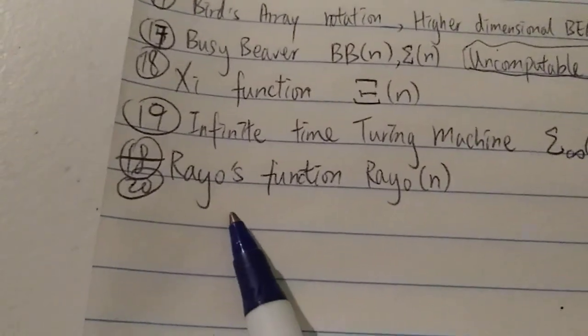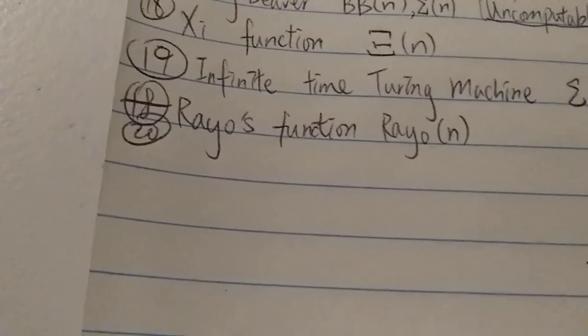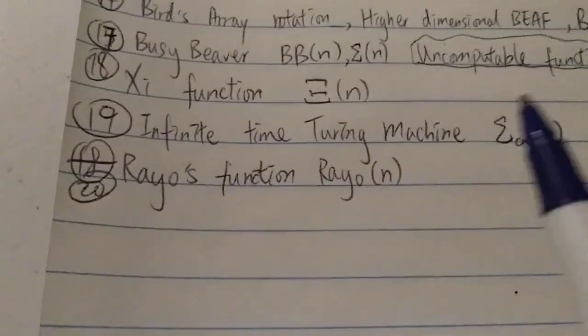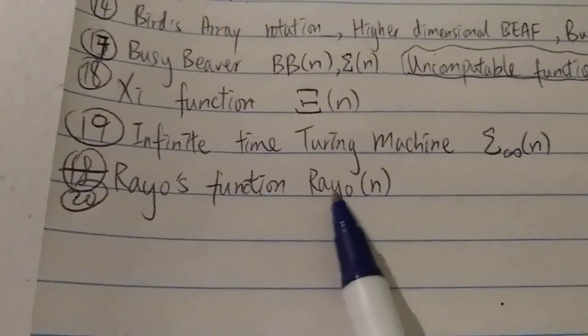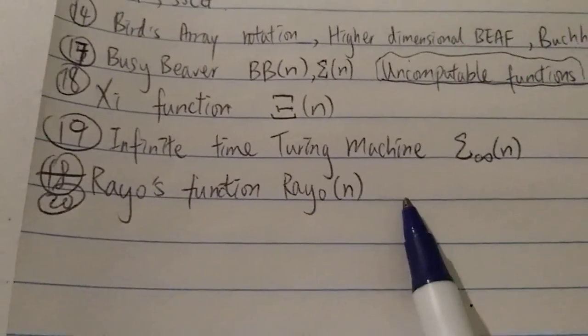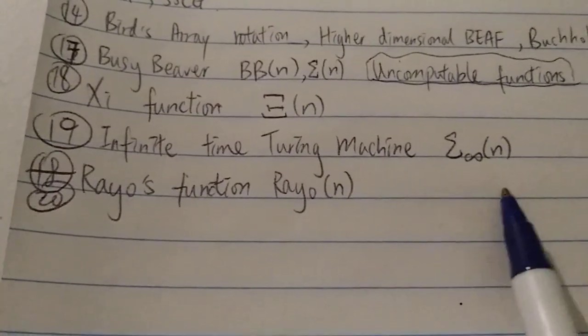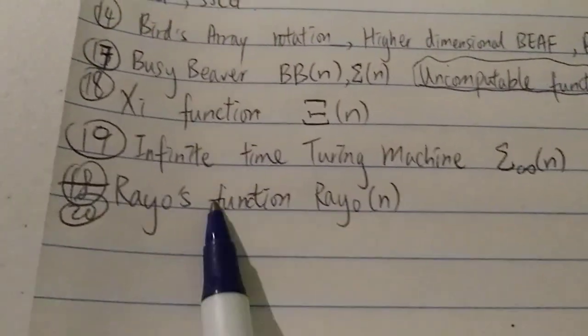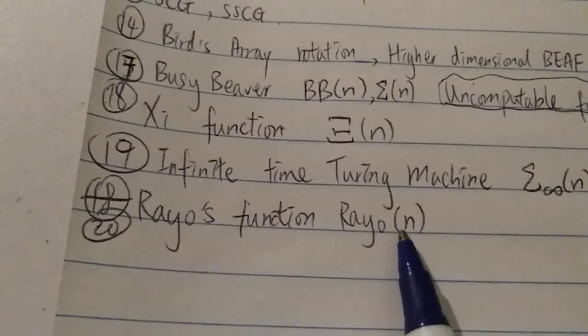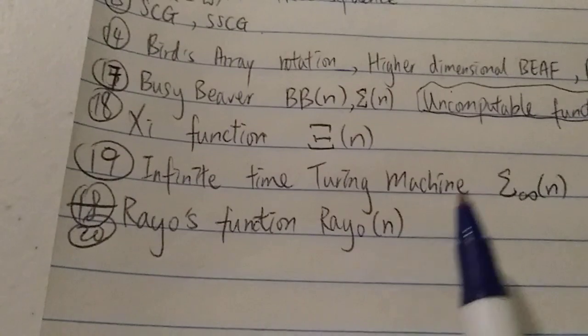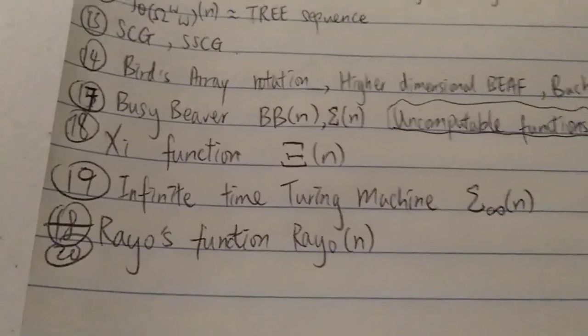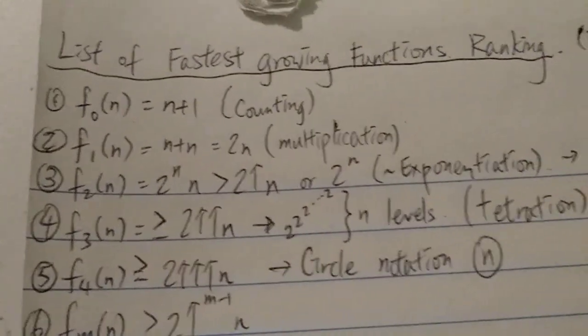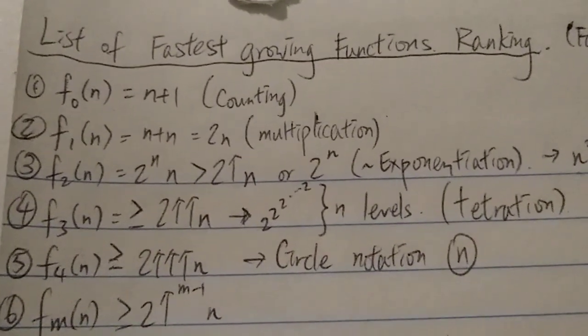But those are, again, not very well defined. And even some people say Rayo's function is not 100% well defined. It's kind of like, it is based on Googleology. Some people said it's only half well defined. Anyway, I only include this list until Rayo's function. And so this is basically some of the most well known functions ranked from slowest to quickest. So anyway, thanks for watching and have a nice day.